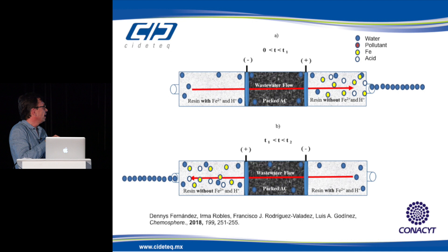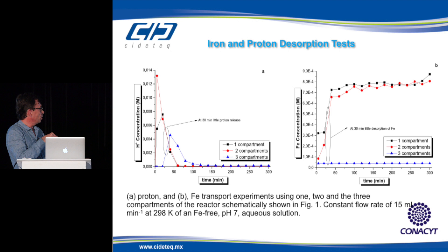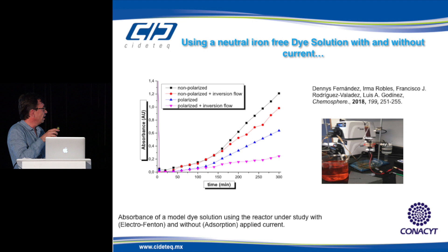The goal is to find time T1 and thus the frequency at which we switch flow direction and reactor polarity. We performed transport experiments measuring how protons and iron migrate across one, two, and three compartments (resin, carbon, resin), to determine the switching time that keeps iron and protons within the reactor at all times.